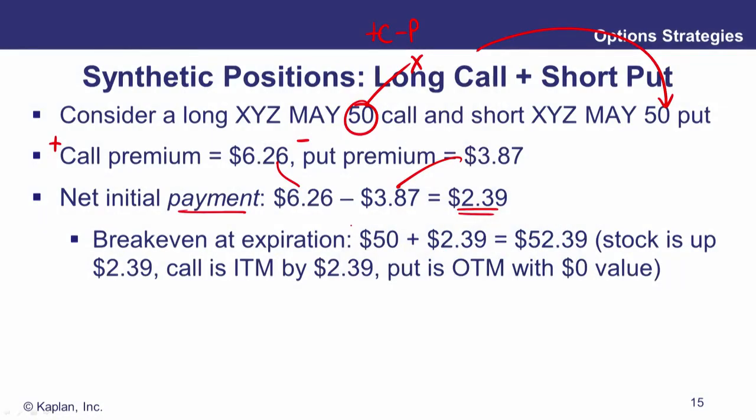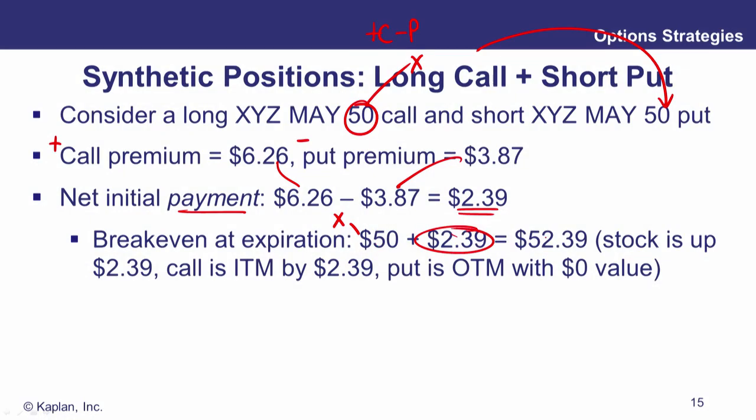If the underlying is above $52.39 on the upside — reflecting the net payment of $2.39 you've made and the $50 strike you have to pay — you profit. If the underlying goes up, you exercise your call and pay the strike at $50. If the underlying goes down, the holder of the put will exercise their right to sell at $50 and you will pay $50 for the asset. So no matter what happens, you're going to pay $50 for the asset. Given you paid $2.39 for this long call short put position, $52.39 is your break-even.